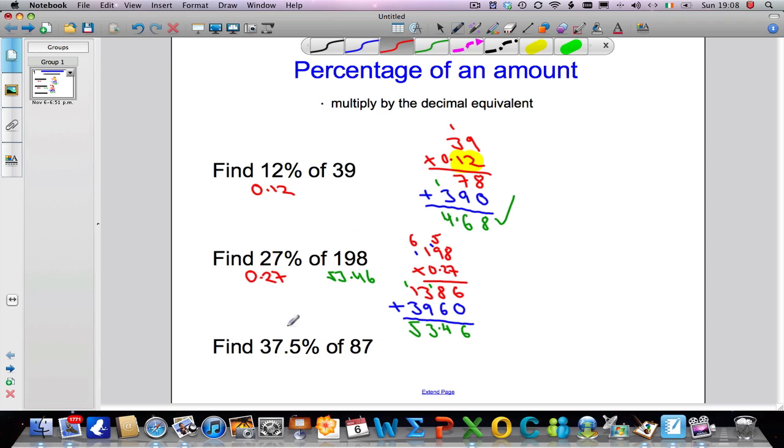All right, last one. So, I want 37.5% of 87. What is 37.5%? Well, as a decimal, it's going to be 0.375. This one will take a little bit longer, but again, it's the same technique. So, it's going to be 87 multiplied by 0.375.